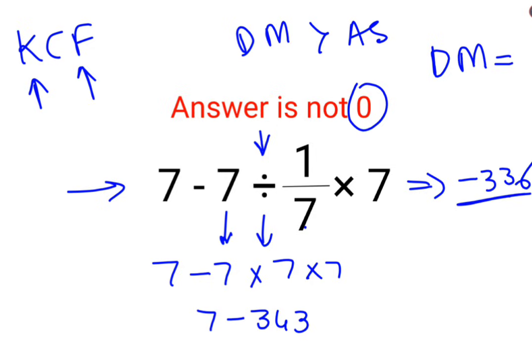Why? Because when you take, when you do subtraction of 7 from 333, the answer is 336. But the answer will always carry the value or the sign of the bigger number. So here it will be minus 336.